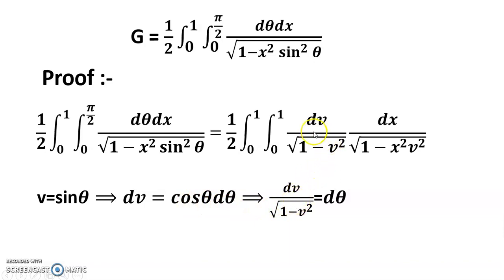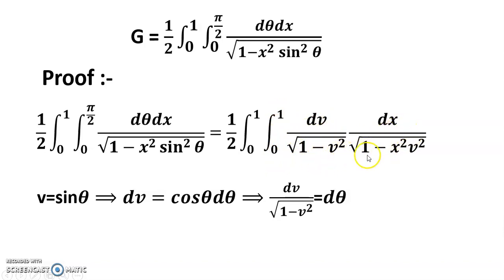The limits change accordingly: when theta equals 0, sin theta equals 0; when theta equals pi/2, sin theta equals 1. So I get dv divided by the square root of 1 minus v-squared, times dx divided by the square root of 1 minus x-squared v-squared, because sin-squared theta equals v-squared.